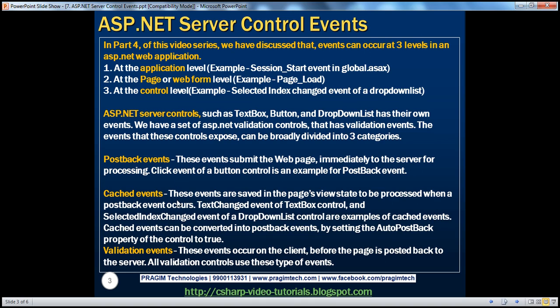We have another category of events called cached events. These events are saved in the page view state to be processed when a post-back event occurs. Examples of cached events include the text-changed event of a textbox control, and along the same lines, the selected index-changed event of a drop-down list control.